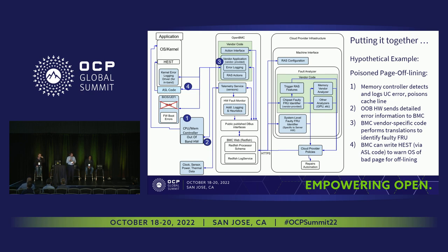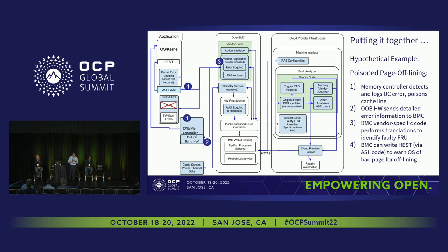I think we went into great detail on what the framework is designed for, how it's going to help, and what pieces are needed from various stakeholders. Now, with the help of some hypothetical examples, I'll show how this actually works when put together. The first example is poison creation and indication to the OS for offlining a page.